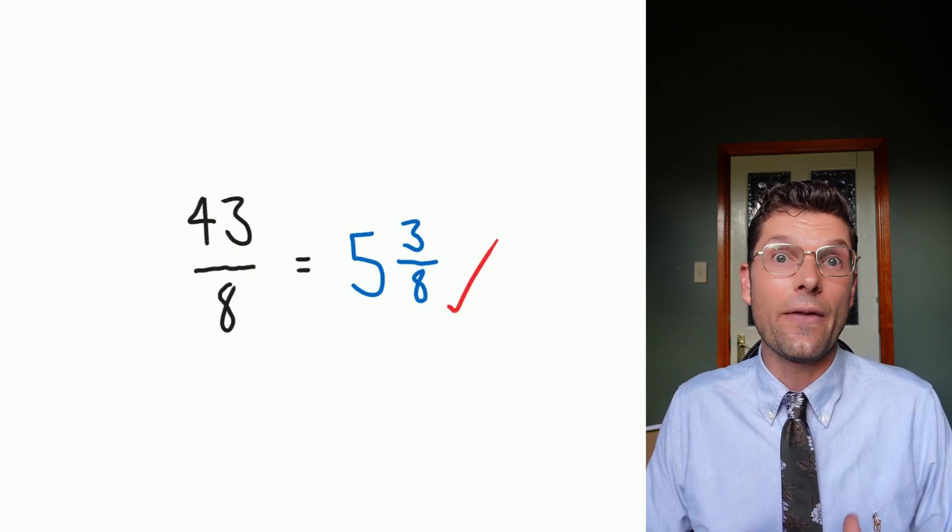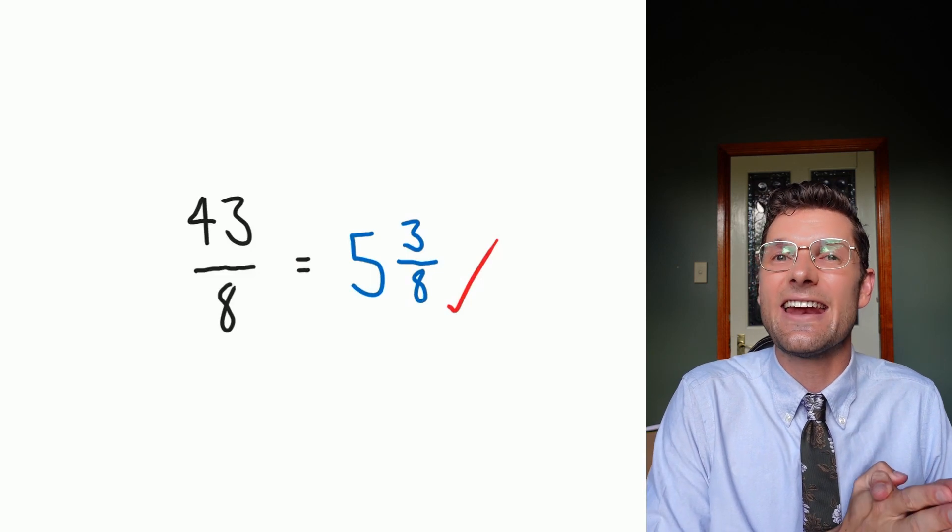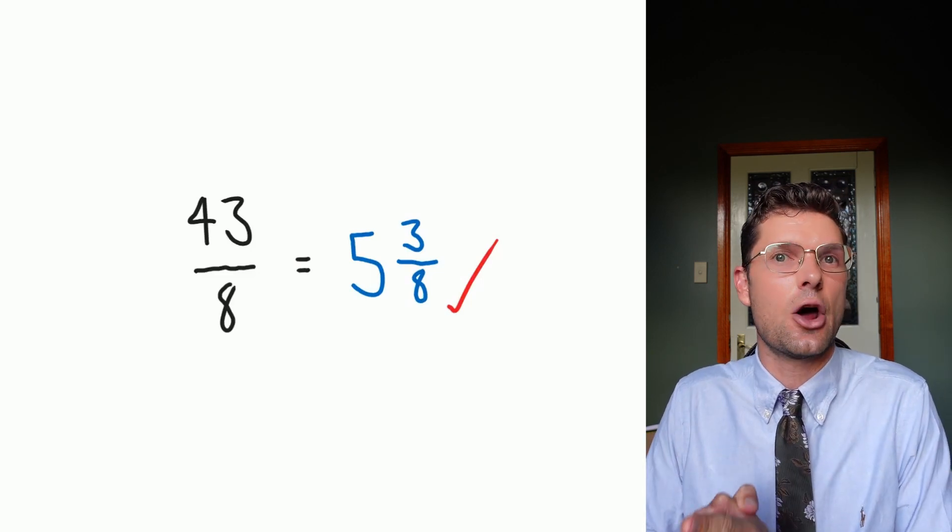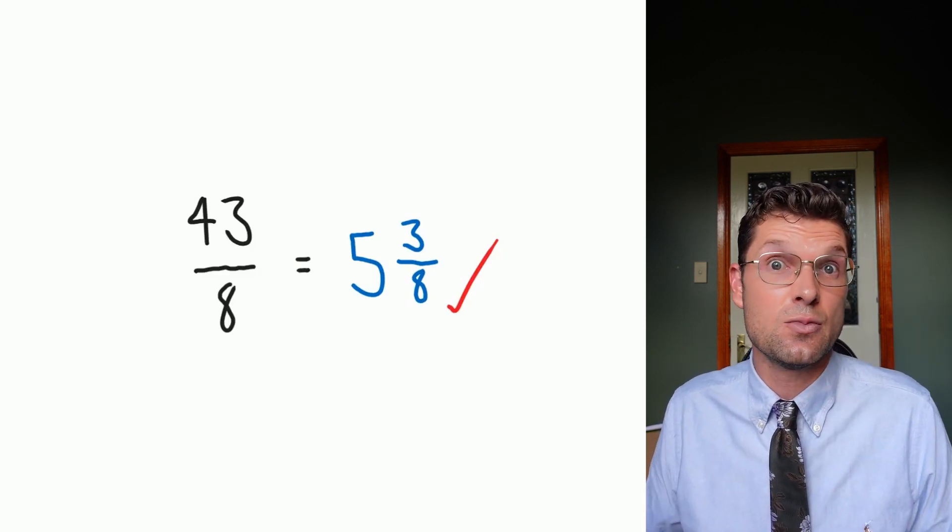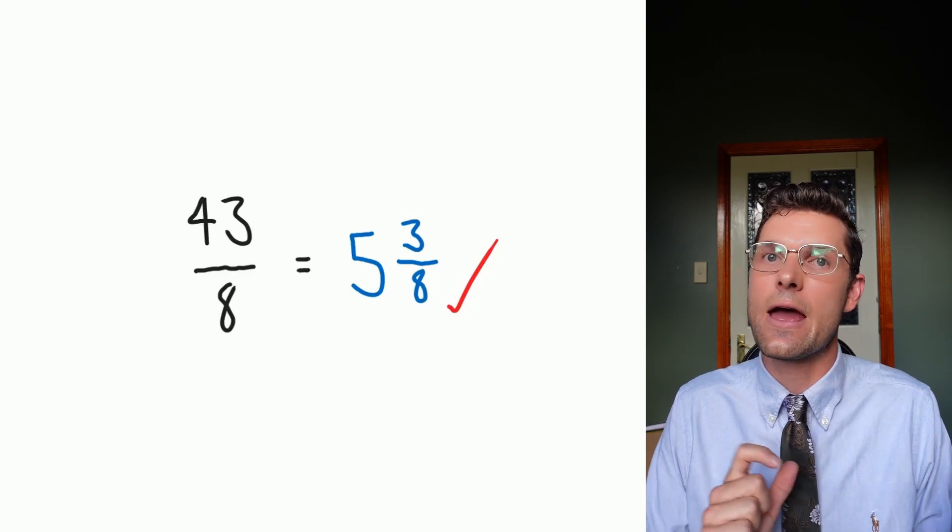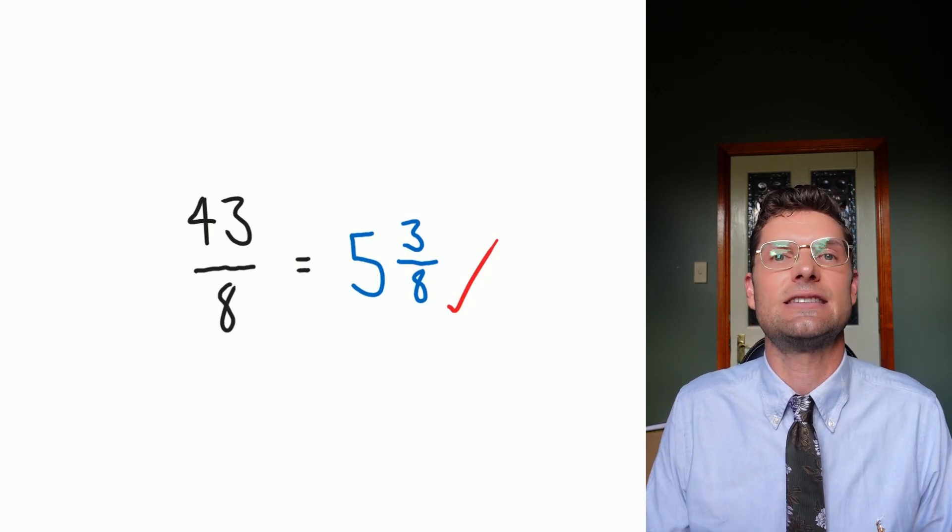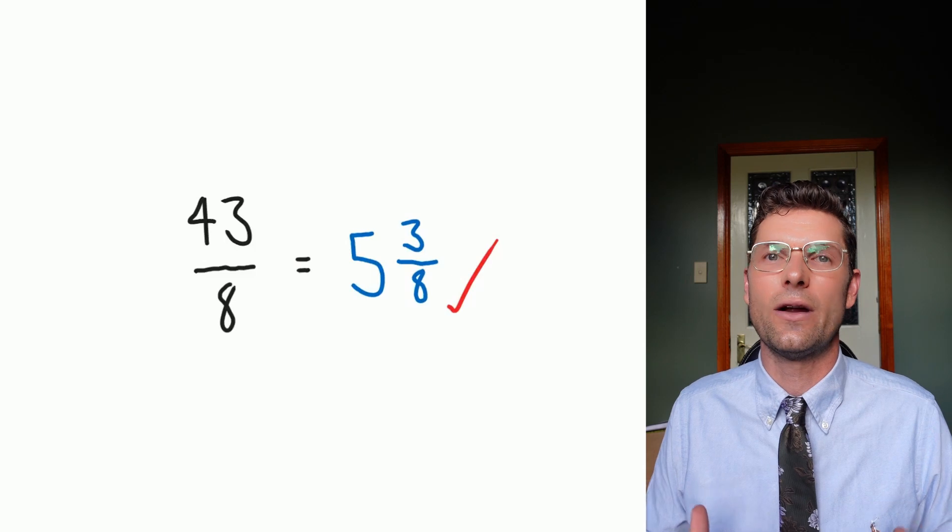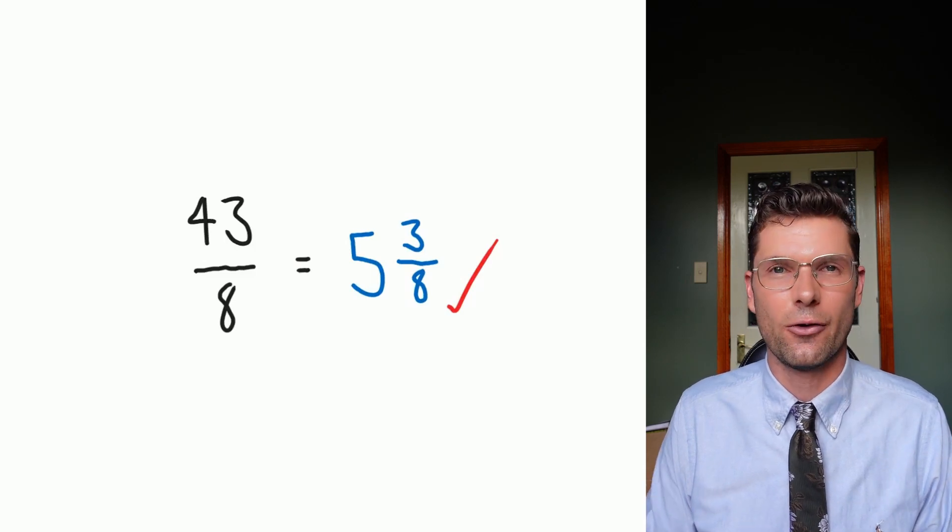This is all we need to do. One thing that I always look for is that the denominator in the question is the same as the denominator in the answer. Sometimes you might have to simplify, but this initial step needs to have the same denominator immediately. Once you've done that, you're pretty confident you're on the right track.